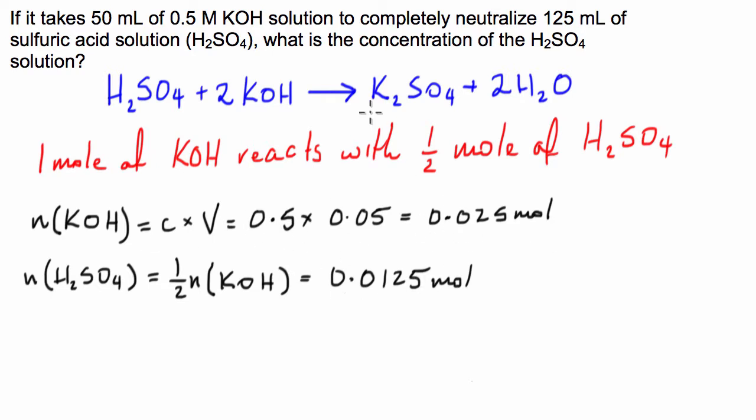Now, we're almost done. So it's asking us for the concentration. So again, we can go to concentration of H2SO4 is equal to the number of moles divided by the volume, which is equal to 0.0125 divided by the volume. It's 125 mils, so that is going to be 0.125. So the denominator is an order of magnitude bigger than the numerator. So we can just say that that is going to be equal to 0.1 mole per litre.